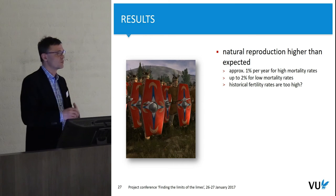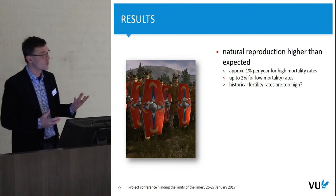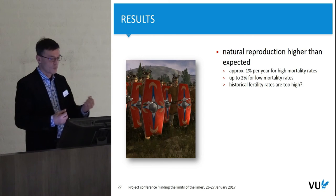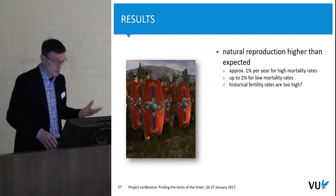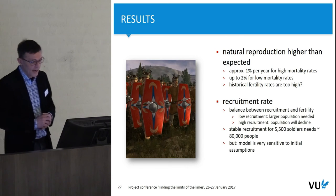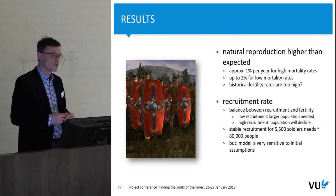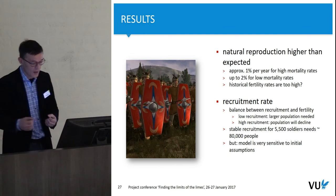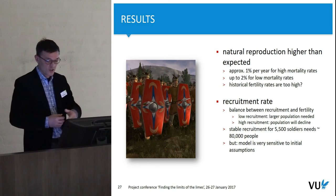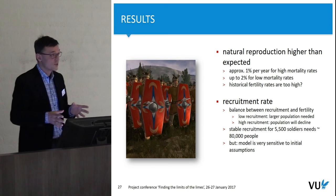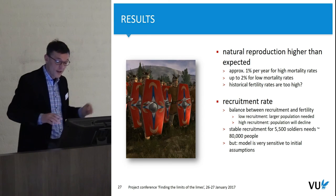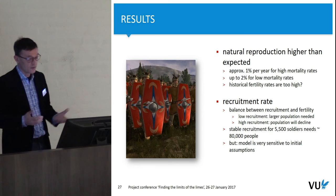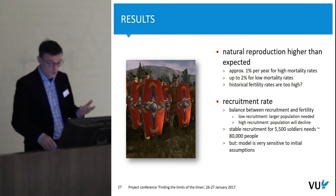What I found doing this is, first of all, that these models are quite tricky to make. One of the things that happened was that the natural reproduction in the model was higher than expected — even if I applied high mortality rates, I would still have 1% growth. So perhaps the fertility rates used were not correct, but where is the evidence? You need to balance recruitment to fertility — obviously the lower the recruitment, the larger the population you will need, but if recruitment rates are too high the population will crash. Based on this very crude model, a stable recruitment where the population would be slightly growing would need about 80,000 people, which is way above what we estimated before. But the model is very sensitive to initial assumptions, so I'm not too sure about the realism of this.